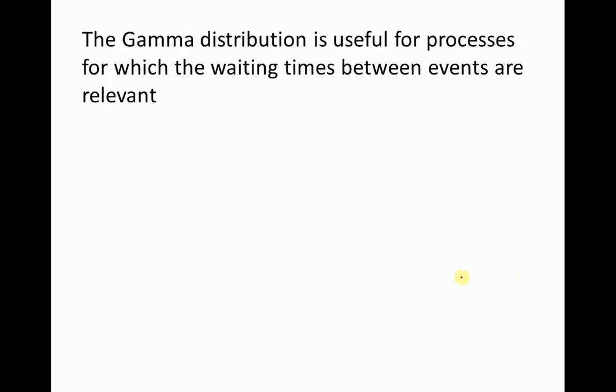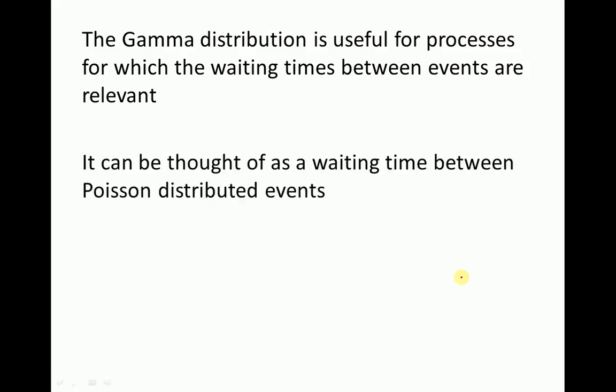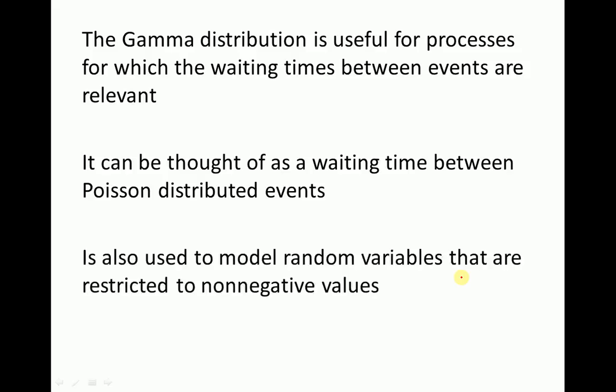Talking about the gamma distribution, the gamma distribution is useful for processes for which the waiting times between events are relevant. It can also be thought of as a waiting time between Poisson distributed events, and it is also used to model random variables that are restricted to non-negative values.